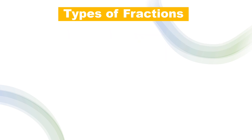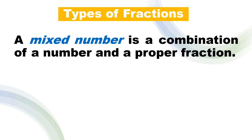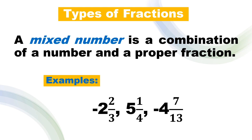Last, we have mixed number. A mixed number is a combination of a whole number and a proper fraction. Examples: negative 2 and 2 over 3, positive 5 and 1 over 4 (or 1 fourth), and negative 4 and 7 over 13. So we have a whole number and a proper fraction.